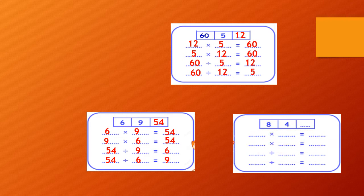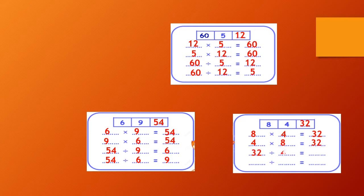8 and 4. 8 by 4 equals 32, 4 by 8 equals 32, 32 divide 4 equals 8, and 32 divide 8 equals 4.